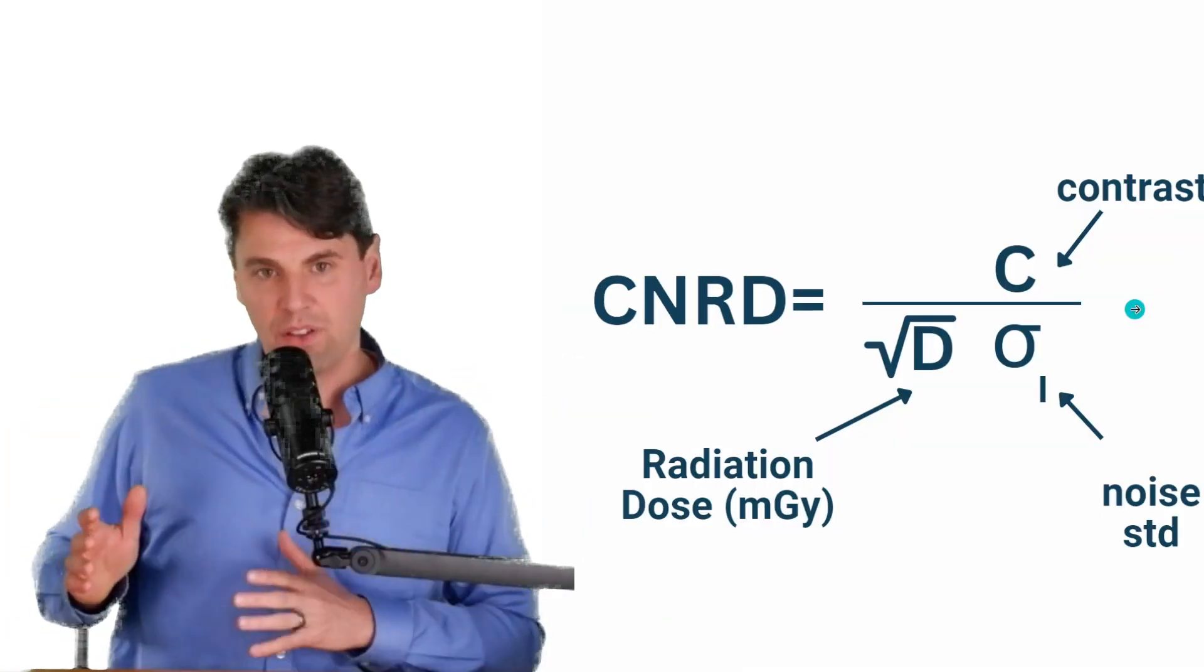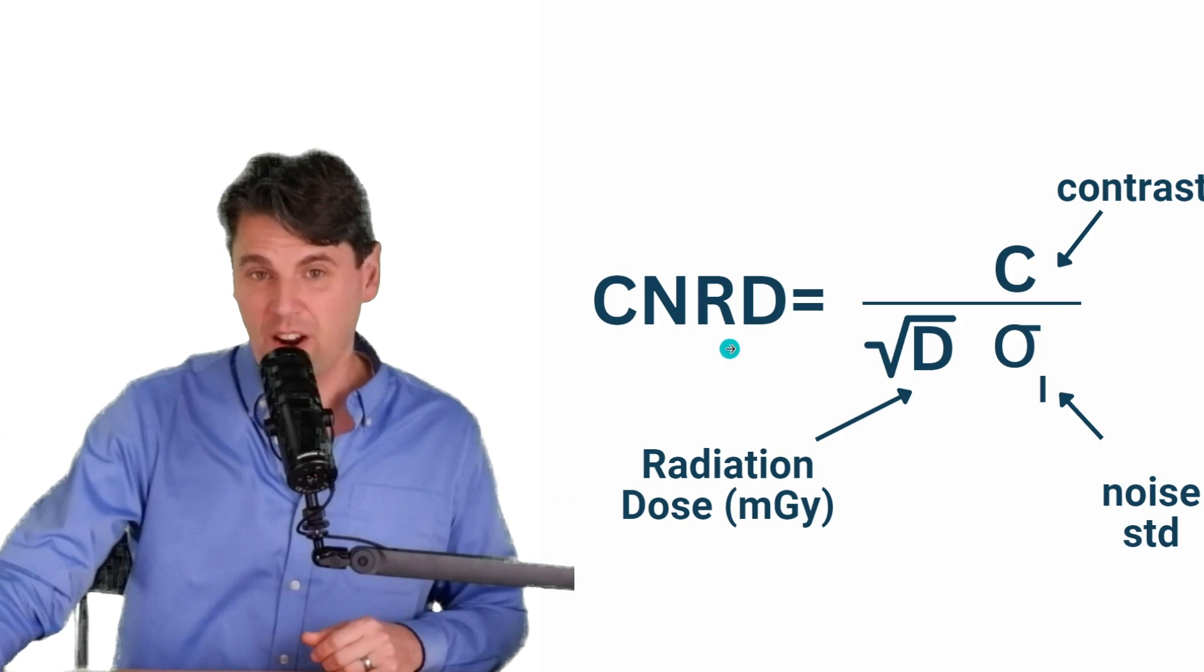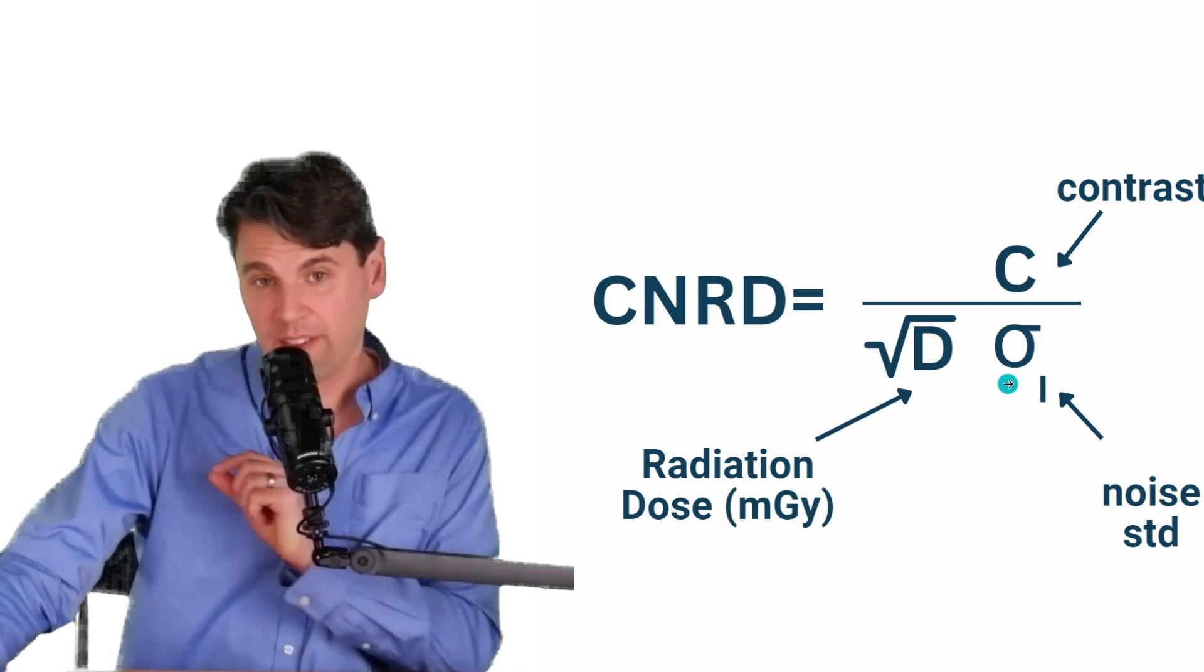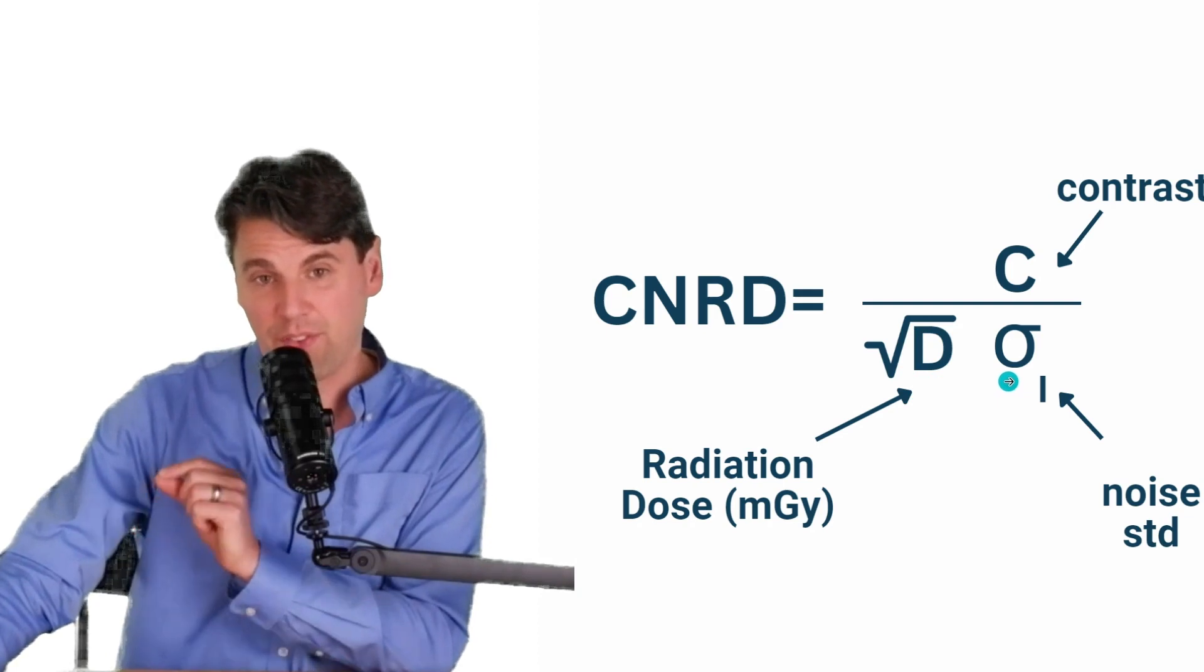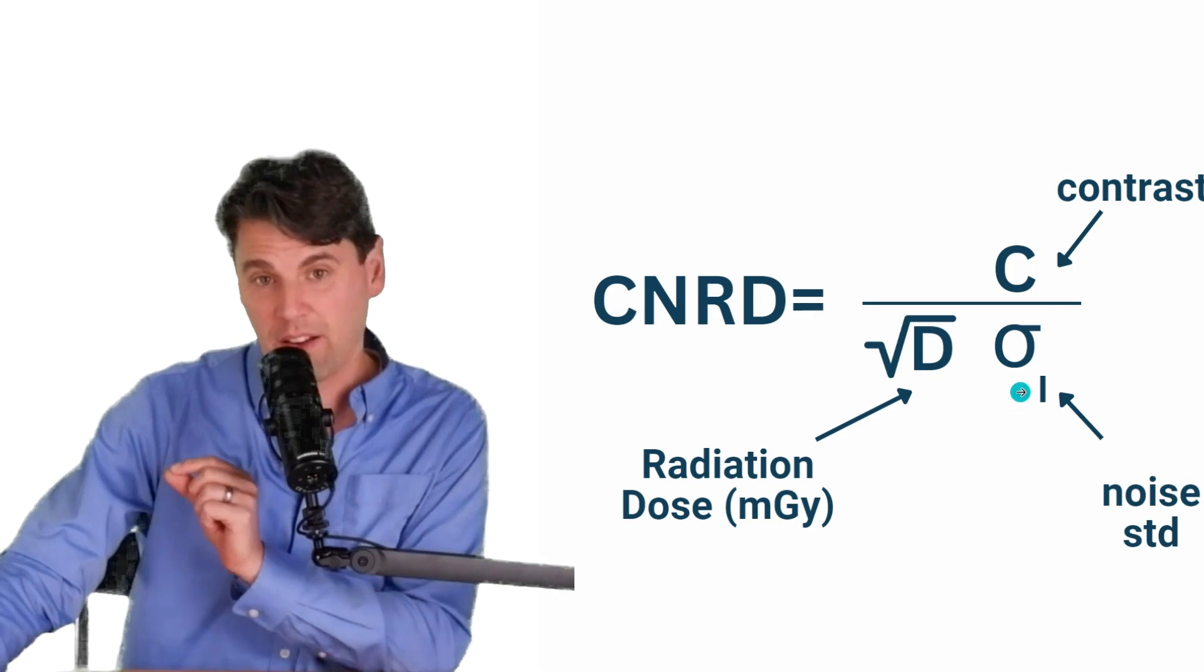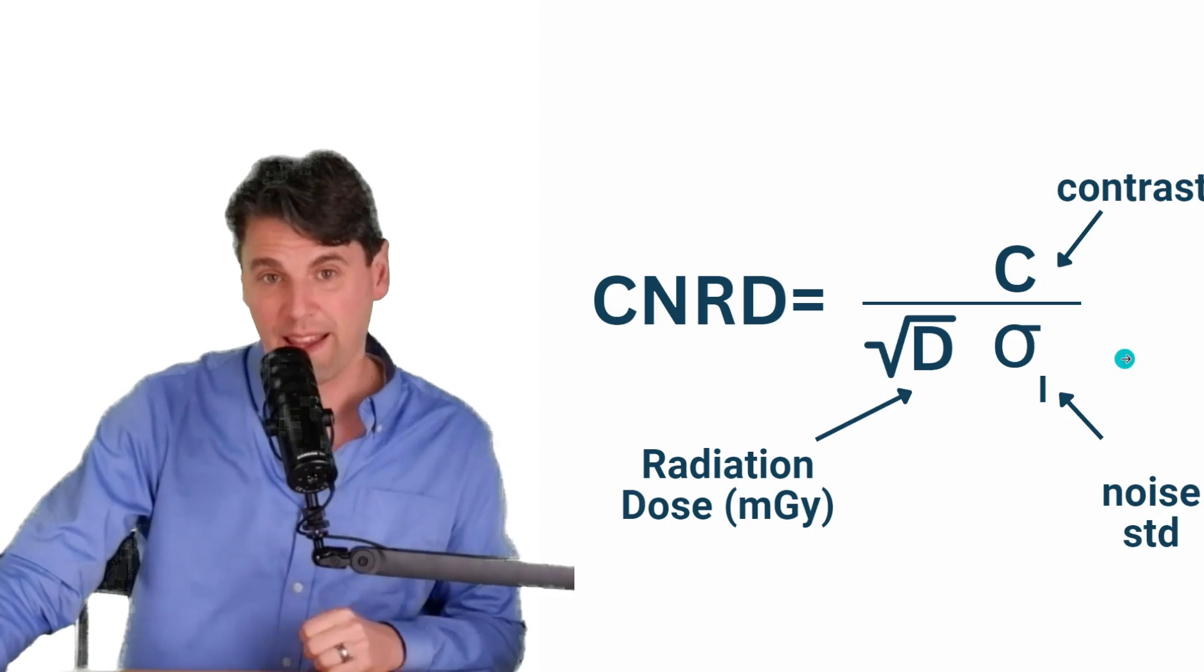The optimization criteria that Willie defined in the first paper on this topic was actually called the CNRD. It's actually the contrast per given noise level. And then we have the square root of the dose in the denominator here. We took the square root of the dose because we have the standard deviation of the noise. And if you remember, that's the relationship here between those two parameters. If we have the standard deviation of the noise, then we need to take the square root of the dose because the dose went as the noise variance.